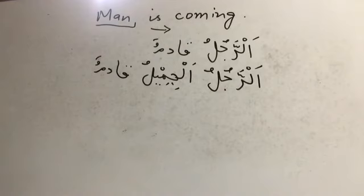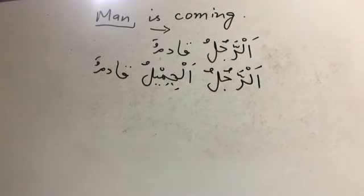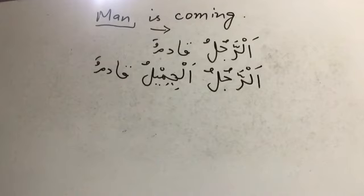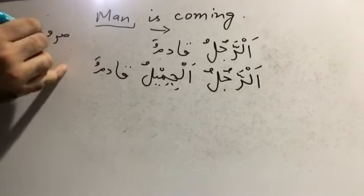So the three things we have studied so far: one is how a nominal sentence will look — the subject will be ma'ruf, it will be definite, and its khabar will be nakira, it will be indefinite. The second thing is the nominal sentence will be in the marfu case — that is the nominative case. But under certain conditions a case can change — it can go to the accusative case or into the genitive case.